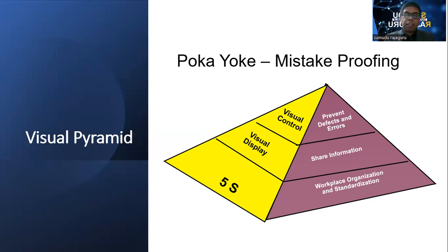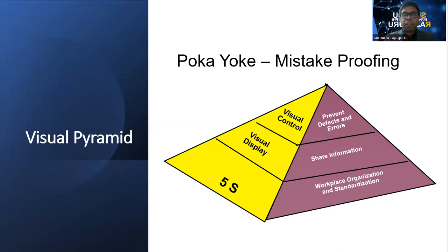Other than that, we can make a pleasant environment. It will also support releasing employees' stress. So when we want to make a visual factory, the first thing we have to do is implement the 5S concept in our manufacturing plant.